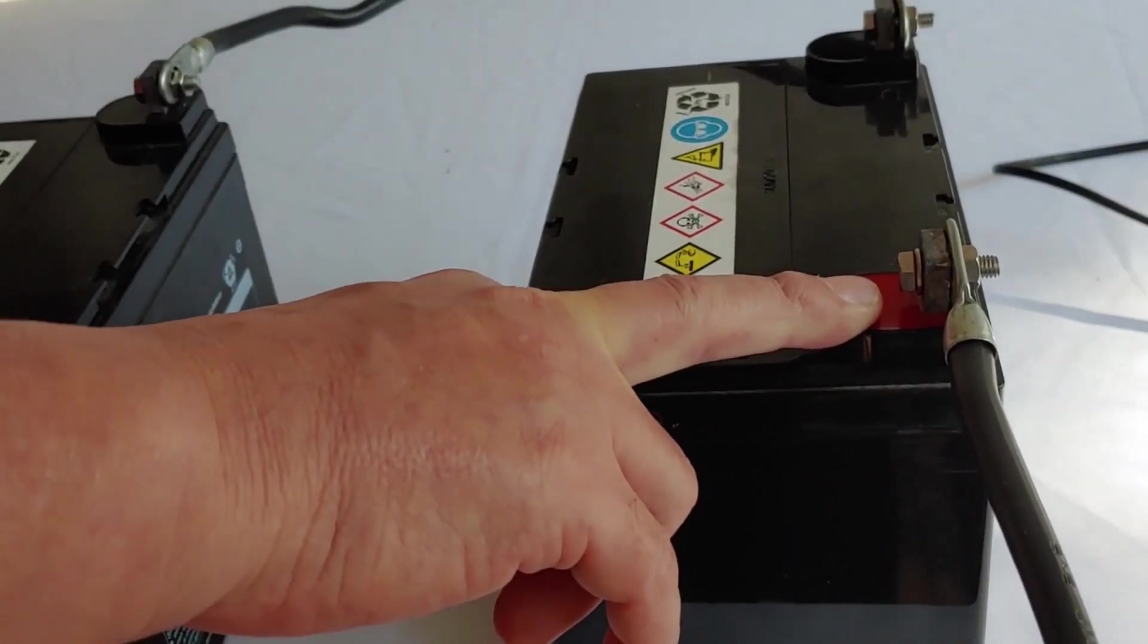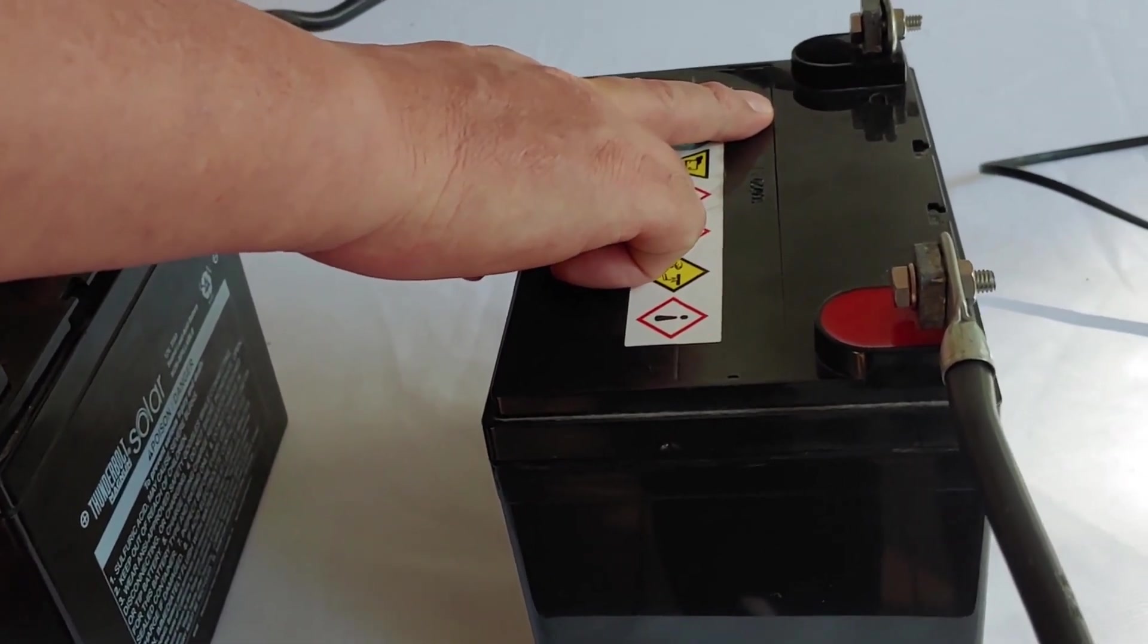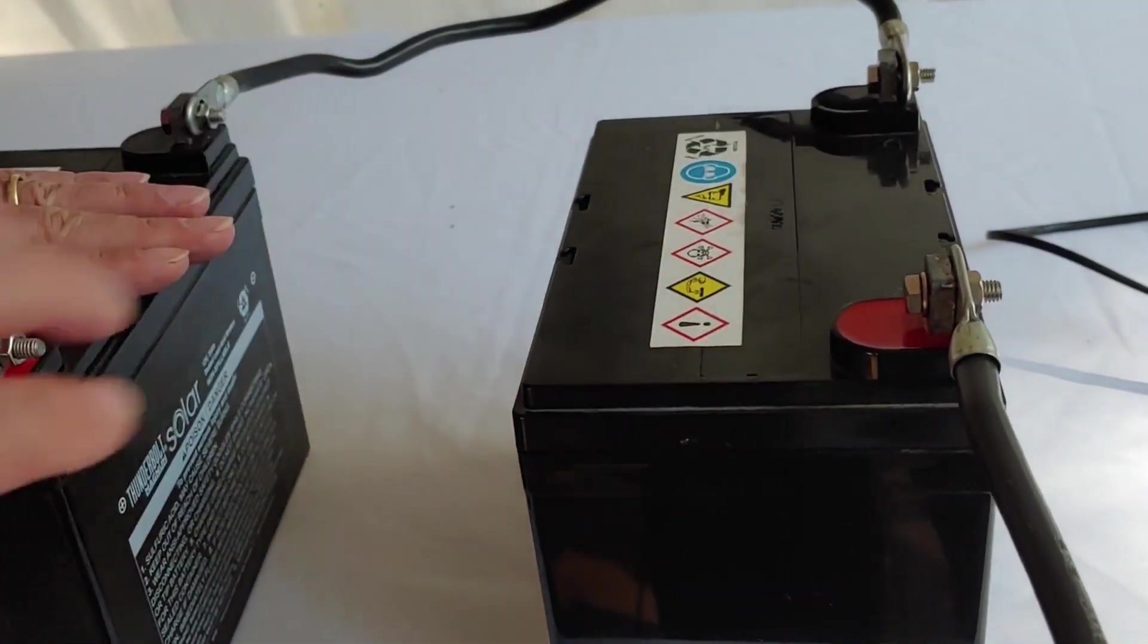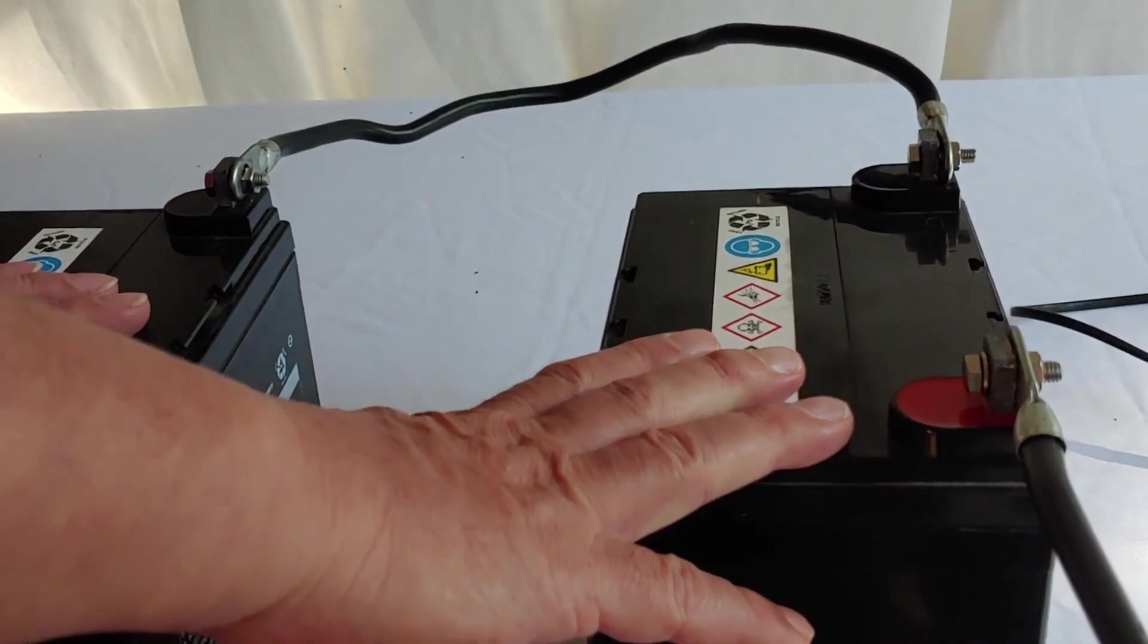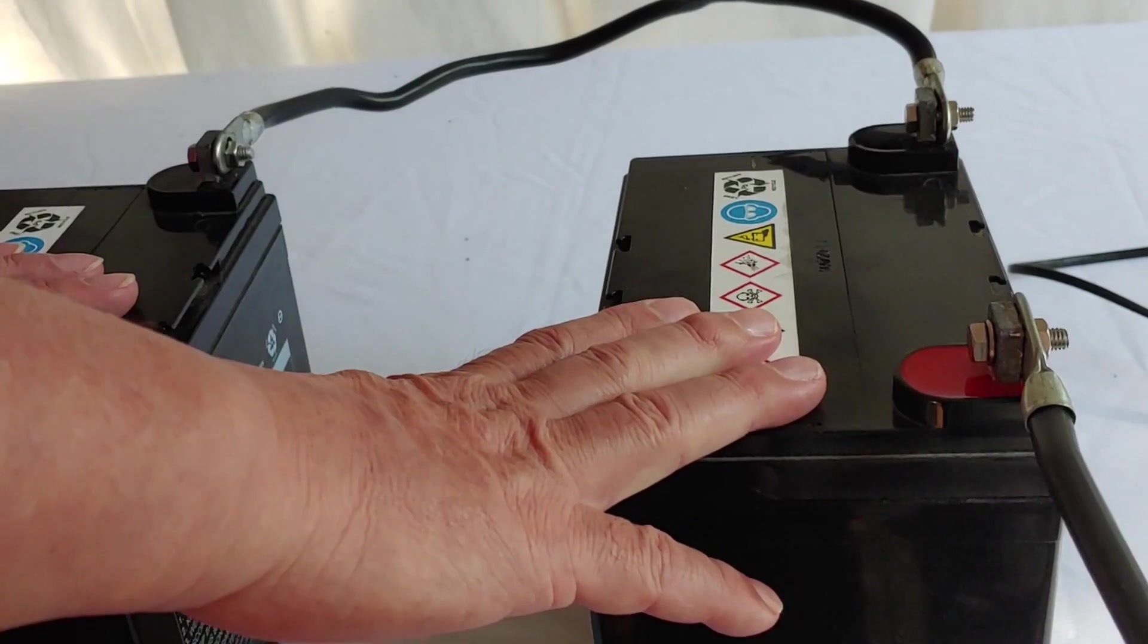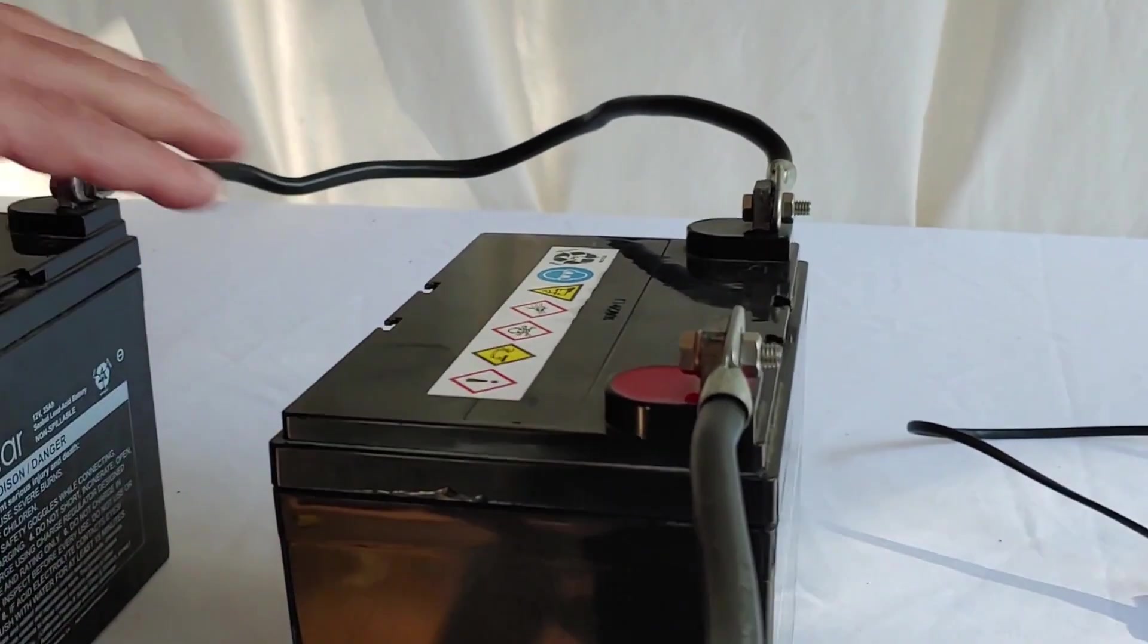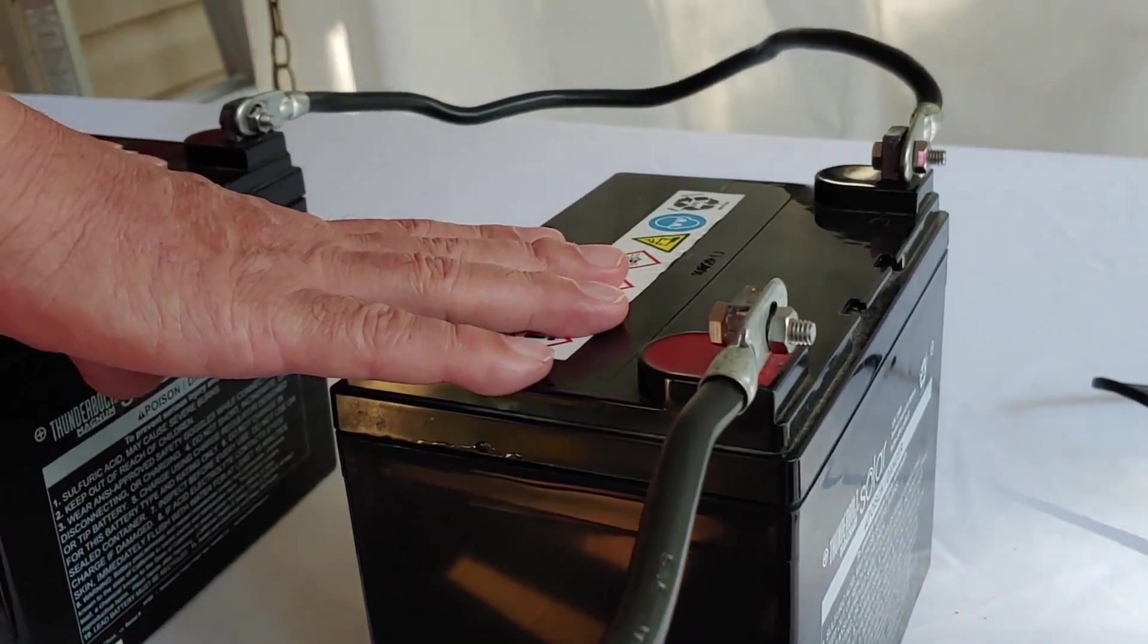Positive to positive, negative to negative makes it parallel, which means I'm extending the battery life of these batteries. So this is a 35 amp hour and this is a 35 amp hour. Now that they're in parallel, they are both still 12 volts, but they are now 70 amp hours. That's what we do. When we're doing it in parallel, we're doubling how much energy you can actually use.